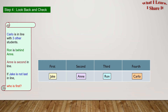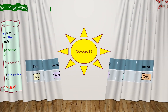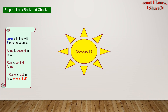Step four: look back and check. Let's go through all the clues and see if we've covered all of them. There are four students in the line — yes, we have put four students in the line. Ron is behind Anne — yes, we can see that over here. Anne is second in line — we can see that over here. And Jake is not last in line — as we see here, Jake is first in line. This matches our answer, so our answer is correct!